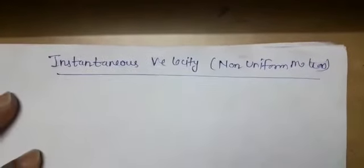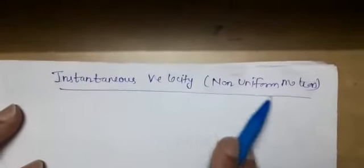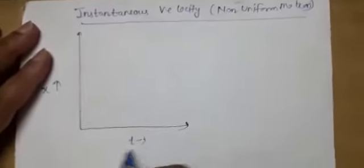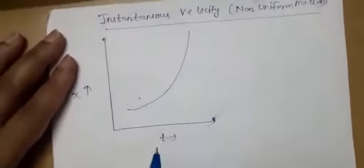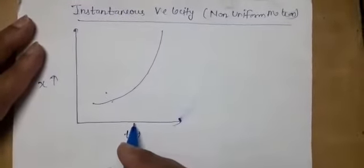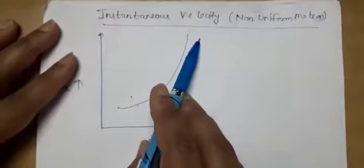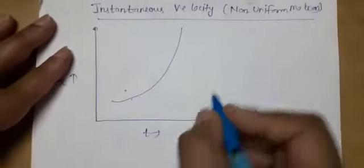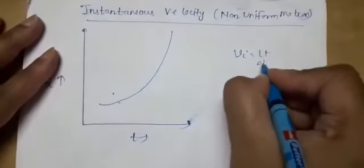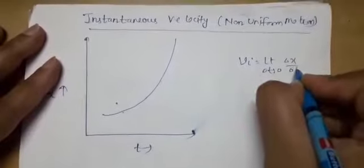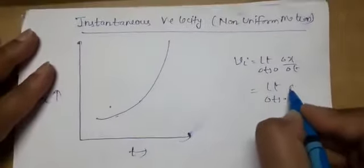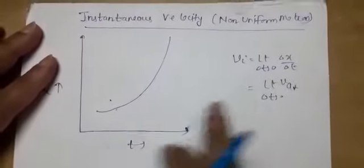After average velocity, next we will study instantaneous velocity for non-uniform motion by the graphical method. We draw the position-time graph again for non-uniform motion — the curve. As explained before, velocity will be different at different points because the angle subtended by the tangent will be different. Instantaneous velocity explains how fast an object is moving at different instants of time. The basic formula for instantaneous velocity is taken as the limiting case of average velocity.